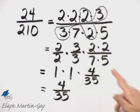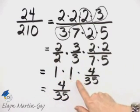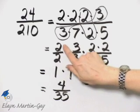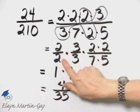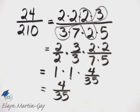To simplify, we are essentially removing factors of 1, and those factors of 1 are represented by the same number on top in the numerator as in the denominator. So we've simplified, and in simplest form, it is 4 over 35.